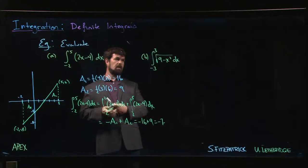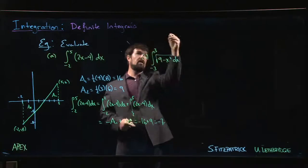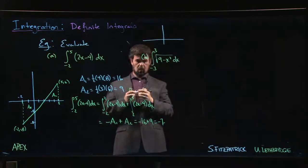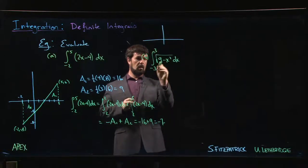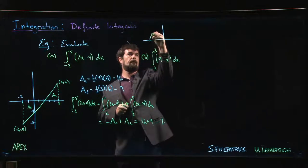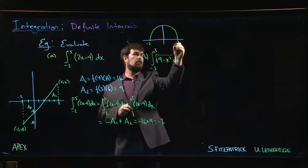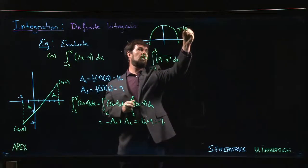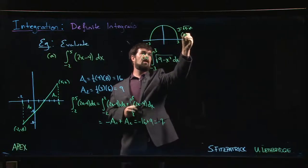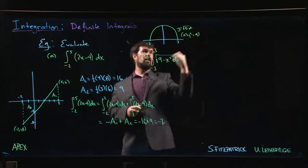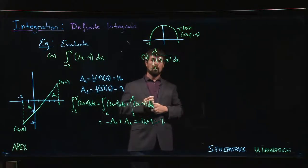Alright, what about this second one? Well, we kind of know what's going on here too, right? Because what is the curve that I get if I plot y equals square root of 9 minus x squared? Well, this is the same thing as x squared plus y squared equals 9. Right? It's the top half of a circle of radius 3.